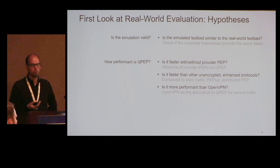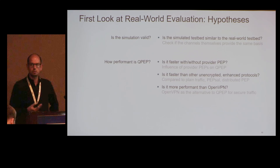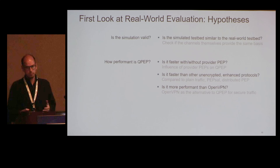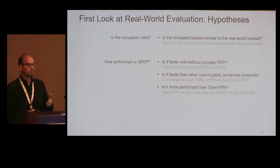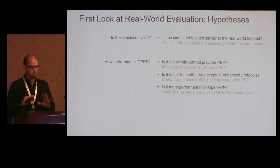We had several hypotheses to test. First: is the simulation James did back then with the Docker testbed and OpenSend actually valid — do our channels look the same? Second: is the performance good enough, as good as shown in that paper, and how does it compare to the provider's performance-enhancing proxy on or off? Third: how does it compare to other available performance-enhancing proxies? And finally, the obvious comparison with OpenVPN, since as an end user that's basically your only option for security. WireGuard is an option but wasn't tested yet.